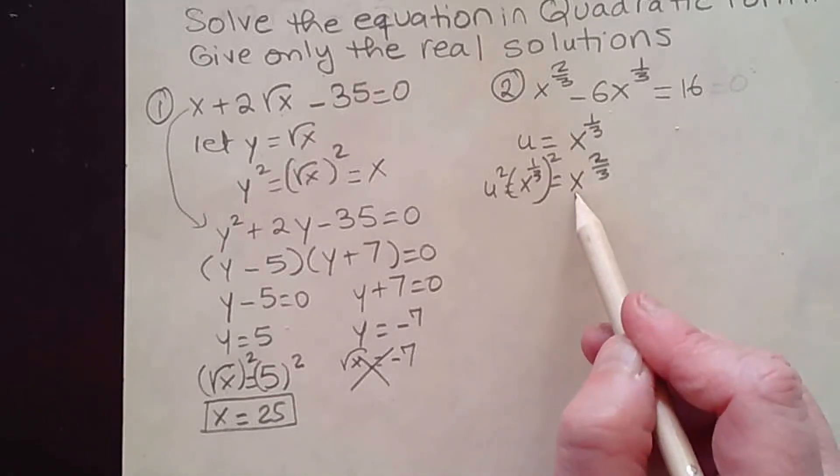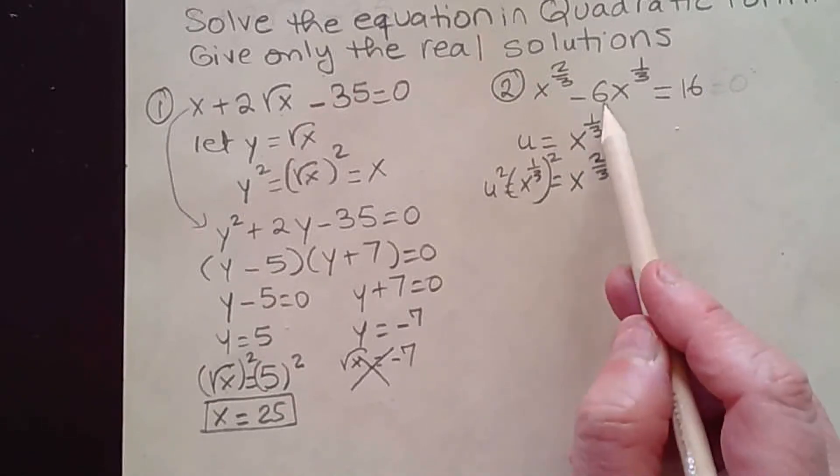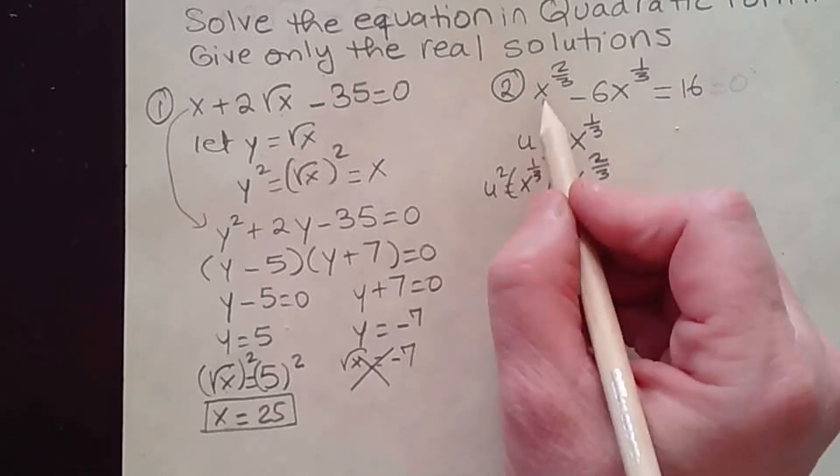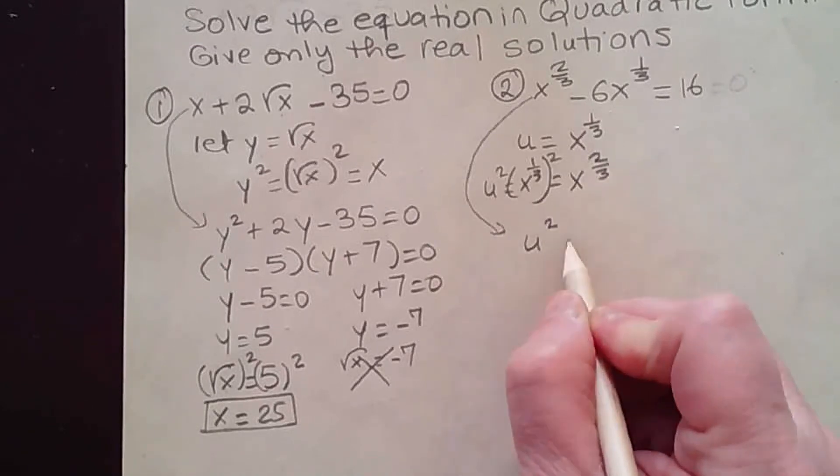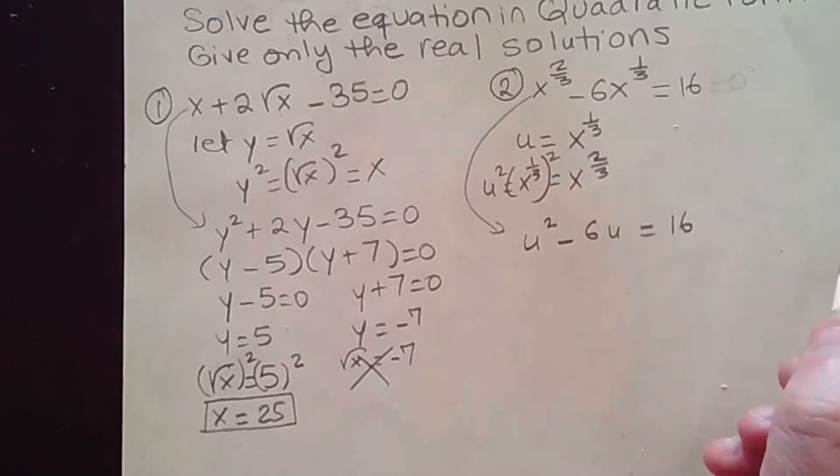So the first term would be u squared, and the second term would be minus 6u. So here you have, you'll end up having u squared minus 6u equal to 16.